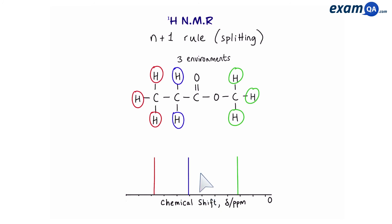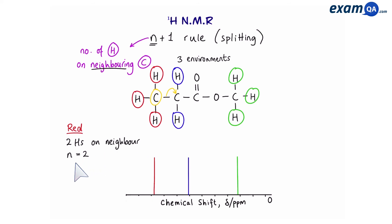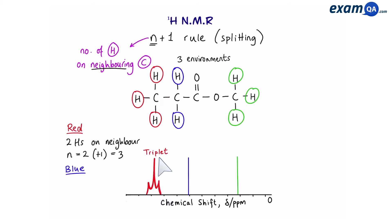Let's apply the n plus one rule to our molecule. N represents the number of hydrogens on the neighboring carbon — add one and that tells you how many times the peak will split. Starting with the red hydrogens: they're on this carbon, and the neighboring carbon has two hydrogens — the two blue ones. So n equals two, and two plus one equals three, meaning the red peak splits into a triplet. For the blue hydrogens: their neighboring carbons are on the left with three hydrogens and on the right a double-bond oxygen with no hydrogens.